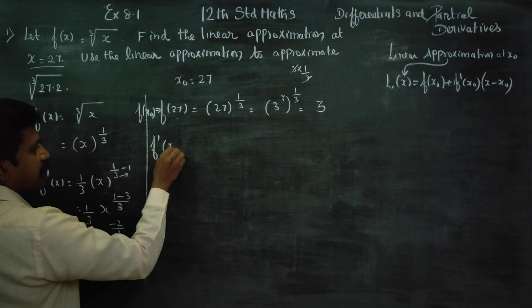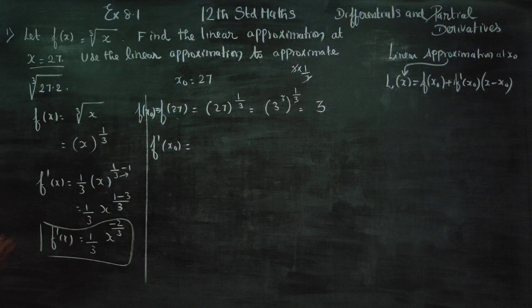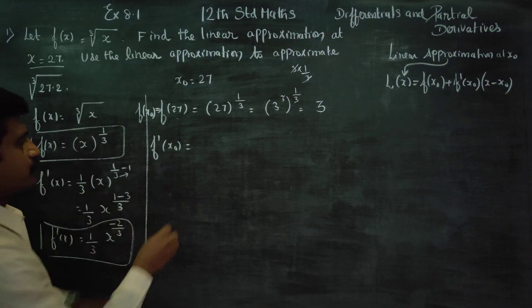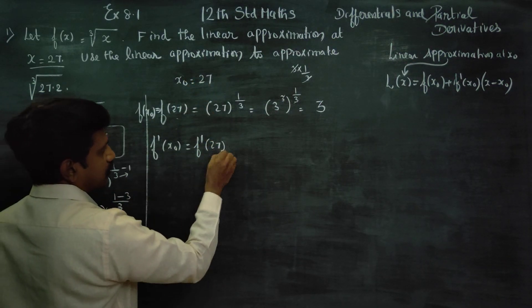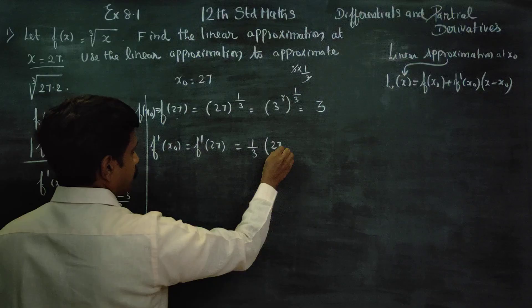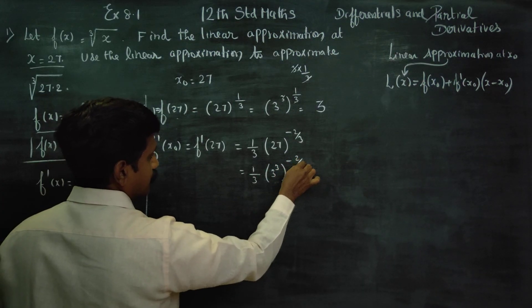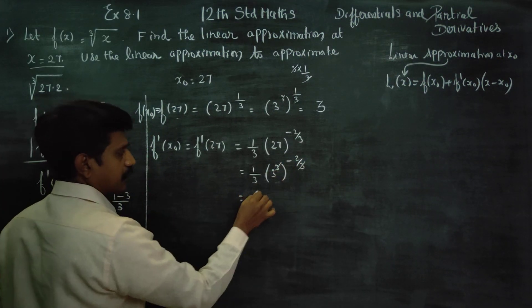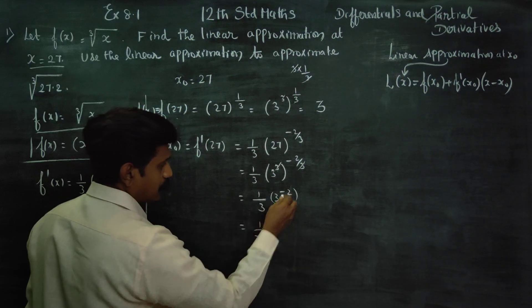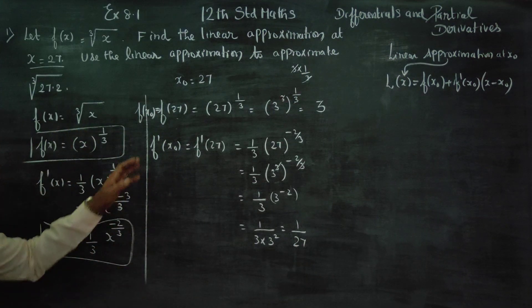After finishing this, I am going to find f'(x0). This is my f'(x). Now f'(27) equals 1/3 times 27^(-2/3), which equals 1/3 times (3^3)^(-2/3). Powers multiply, 3 cancels, giving 1/3 times 3^(-2), which equals 1/27.